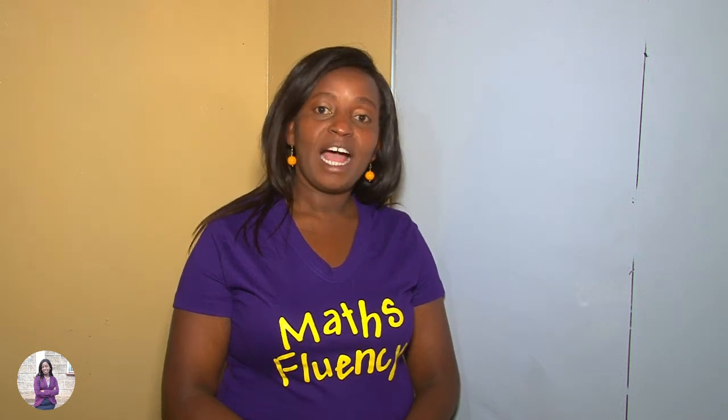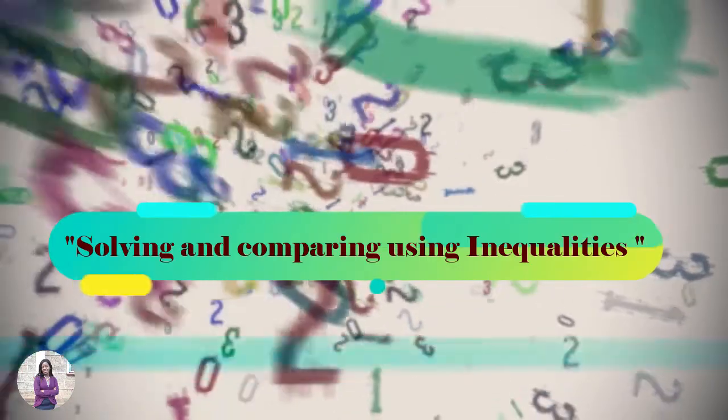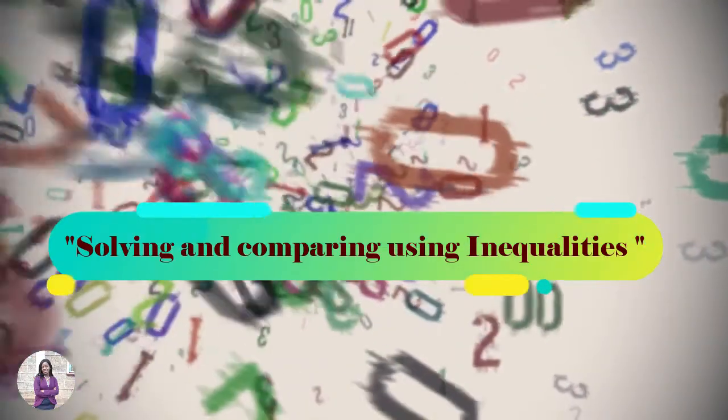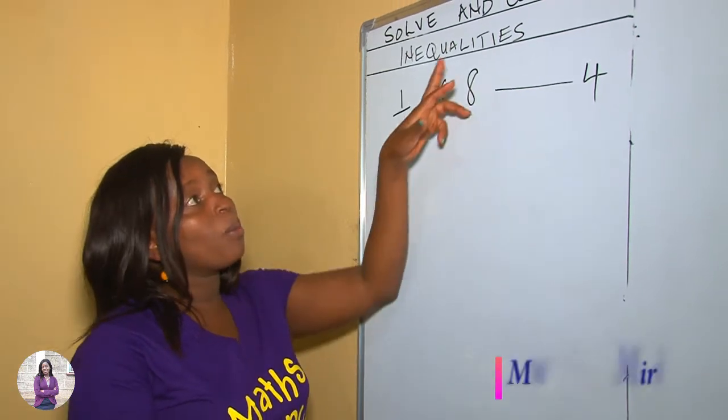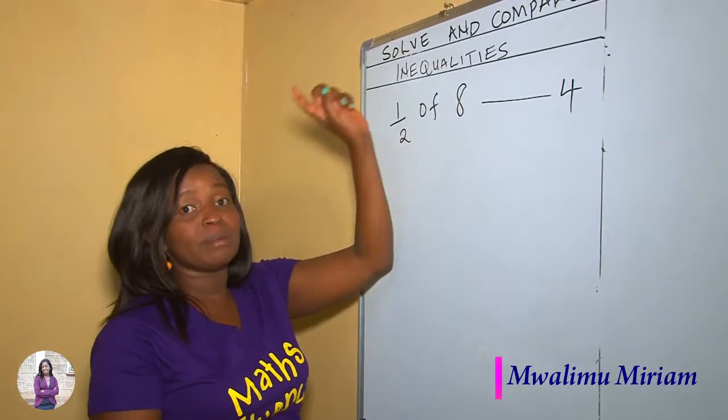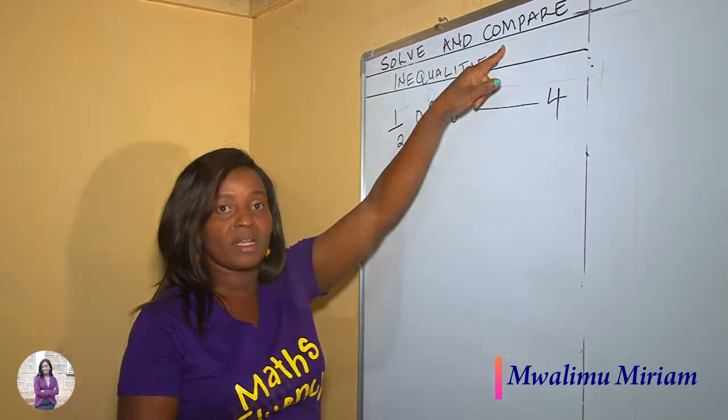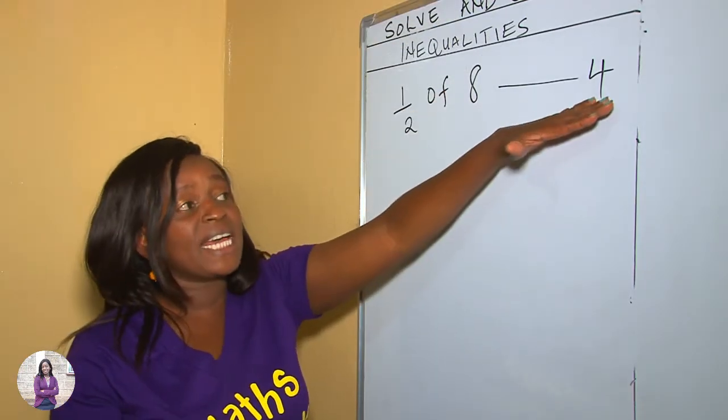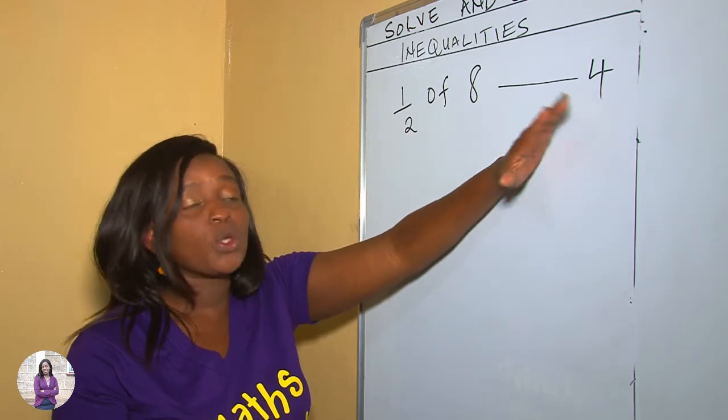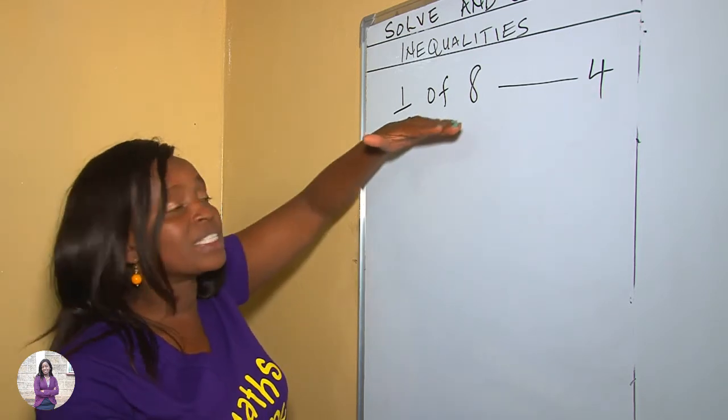Welcome to my YouTube channel, and today's lesson is about solving and comparing using inequalities. In this sub-strand we are supposed to solve before comparing. Solving comes first before comparing. This side you need a sum to work out, and this side is just one digit, so you can't compare a digit with a sum that is not yet solved.